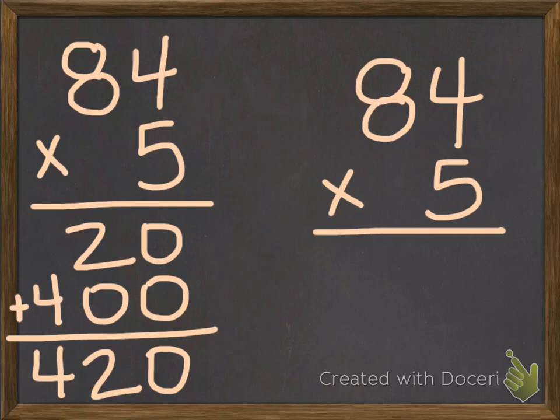Now let's try with another one, 84 times 5. As you can see on the left, I have already done this in expanded form. Okay, remember, step 1 is to multiply the ones place. 4 times 5 is 20. I'm going to put the 0 here and the 2 tens in the tens place above the equation.